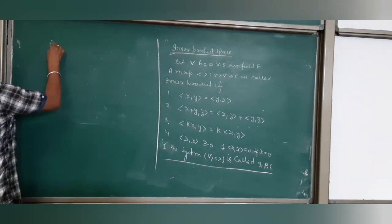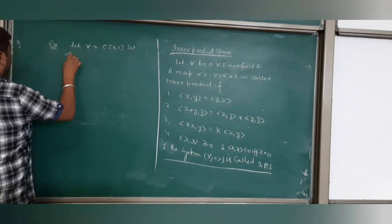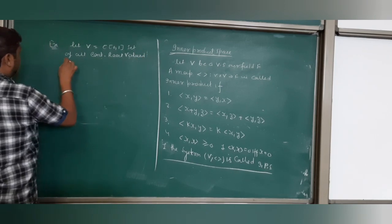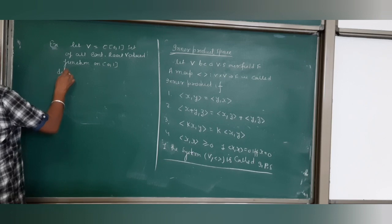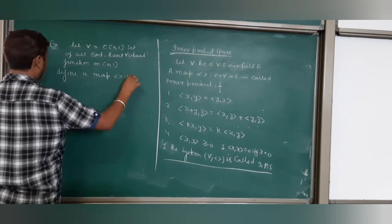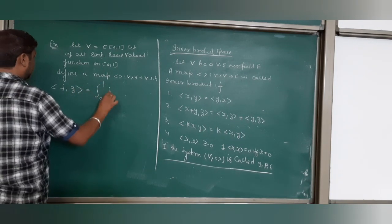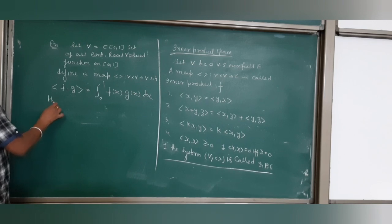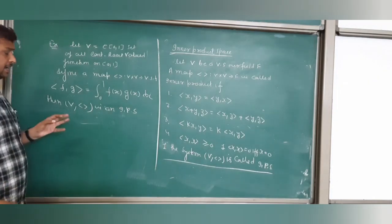Example: let V equal C[0,1], the set of continuous real-valued functions on [0,1]. We define the inner product of f, g as integral from 0 to 1 of f(x)g(x)dx. Then this is an inner product space which you can verify fairly easily.